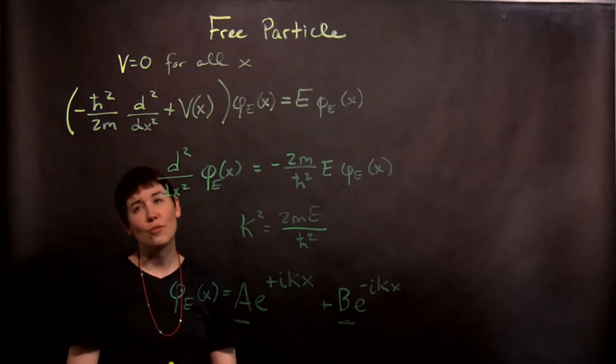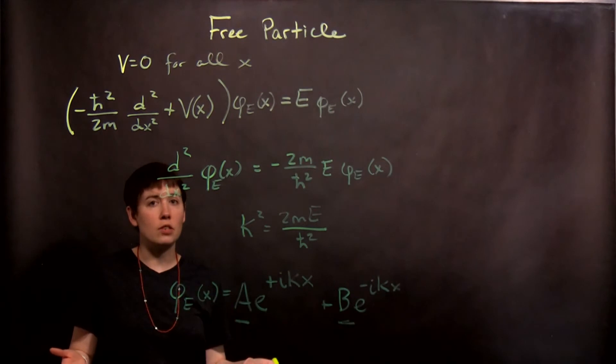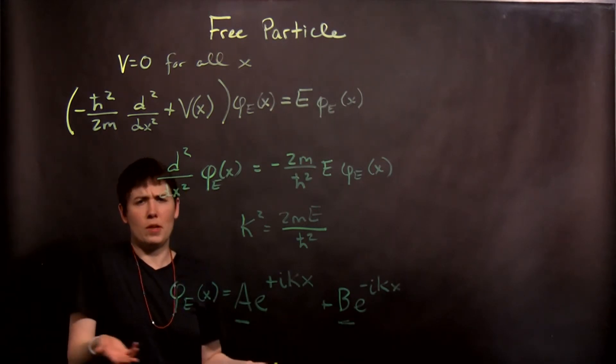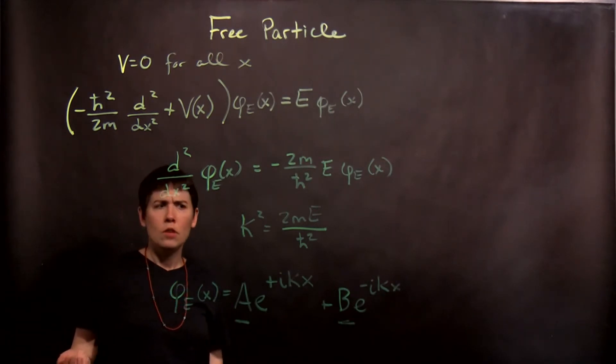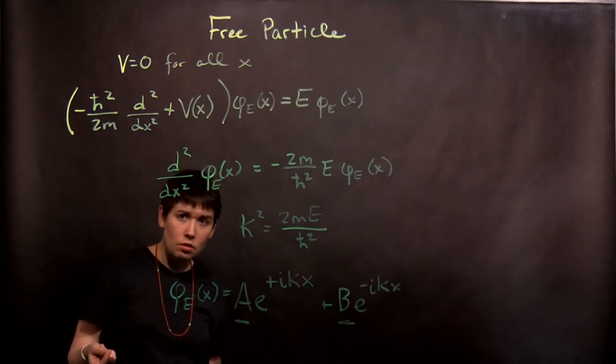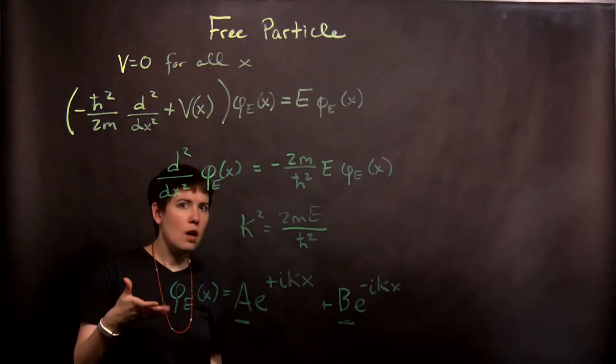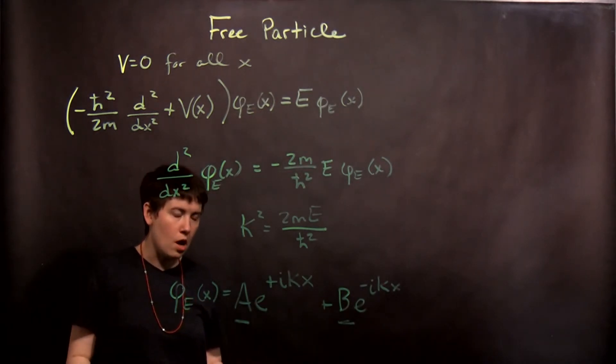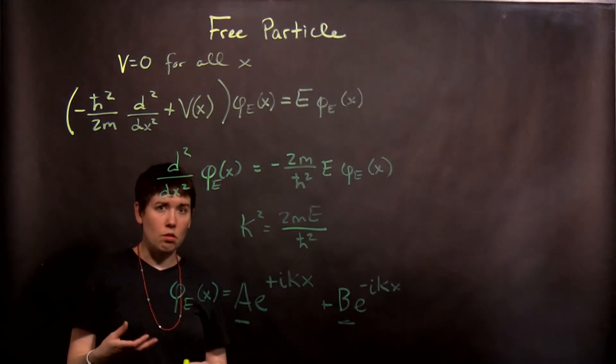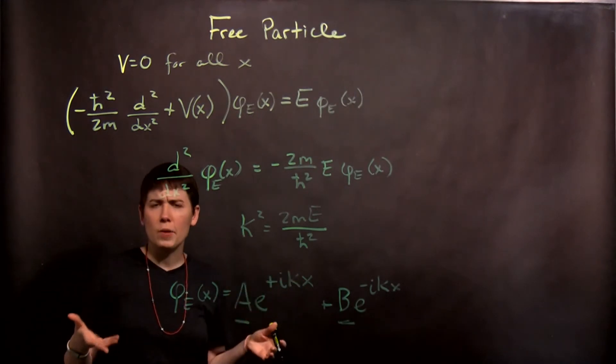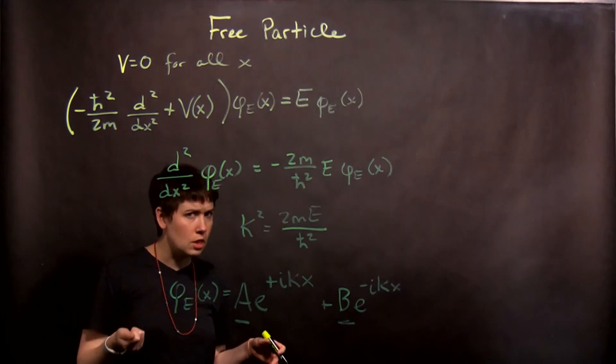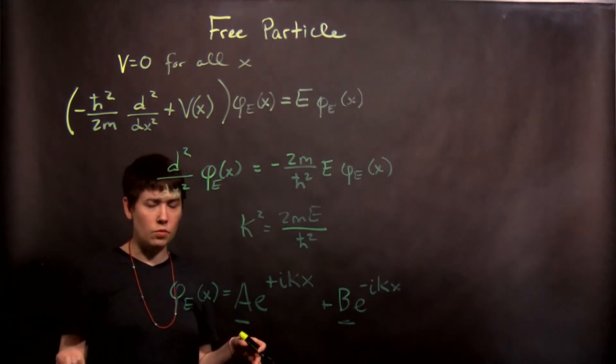So let's think about what that means for the free particle. Are there any boundary conditions? No, there's basically not a boundary. The second problem is normalization. Now it's not confined to be anywhere—it's in all space.